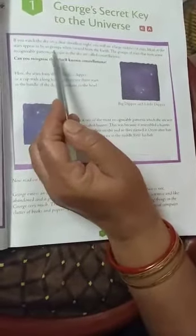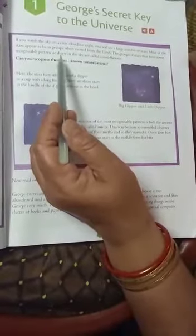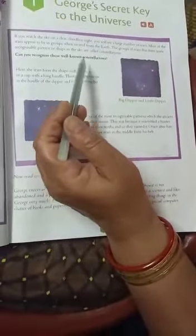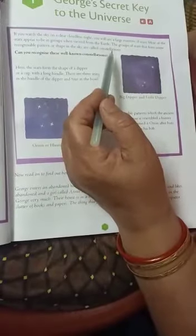So, this way, there is a recognizable pattern when stars, group of stars, form a shape in the sky. What do you mean by constellations?